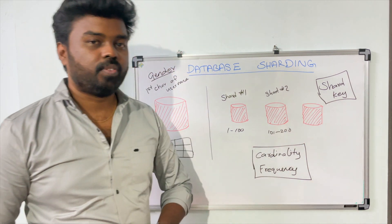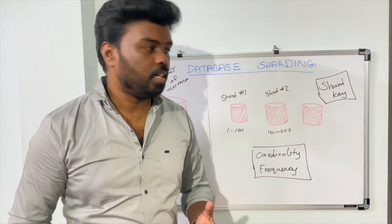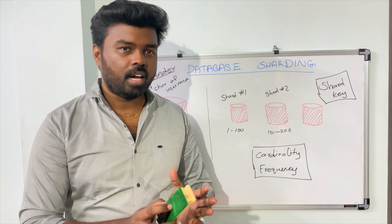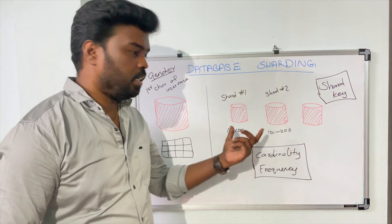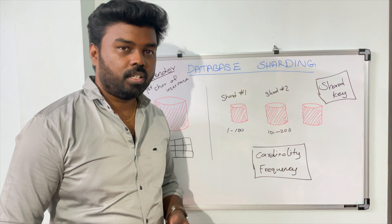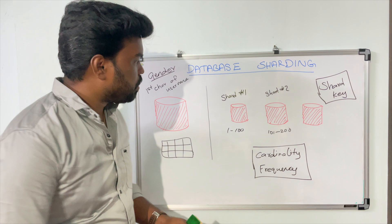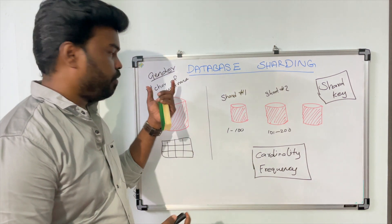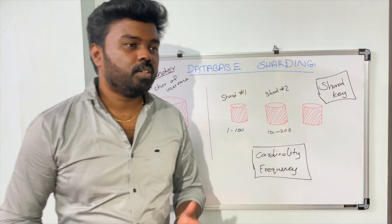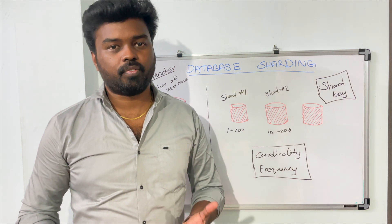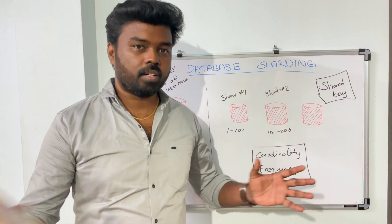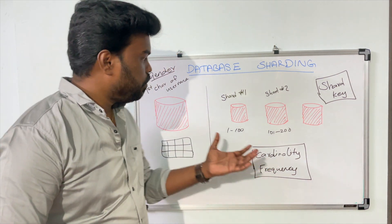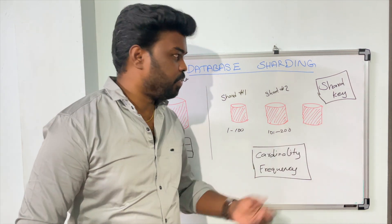Frequency represents how well your data is distributed if you choose a particular shard key. If you choose gender as the shard key and your application has 70% female users and 30% male users, then 70% of the data accumulates into shard 1 and only 30% into shard 2 — shard 1 becomes a hotspot and there's no real benefit to sharding. That's not a well-distributed shard key. But if you shard a user table based on geographical location, and your users are distributed across the world in different countries, you'll have well-distributed data across your shards. That's a well-distributed, high-frequency shard key.